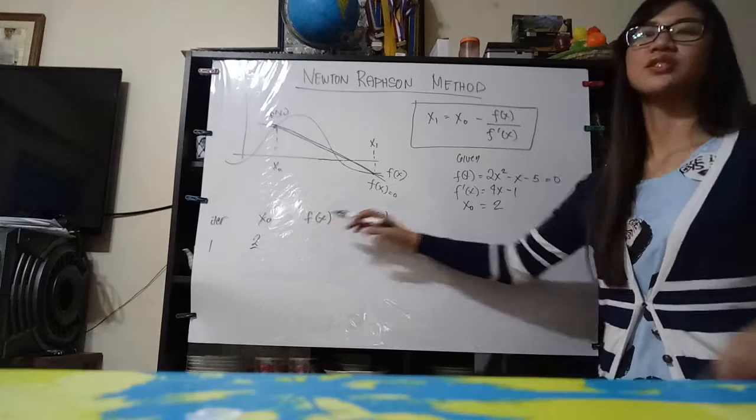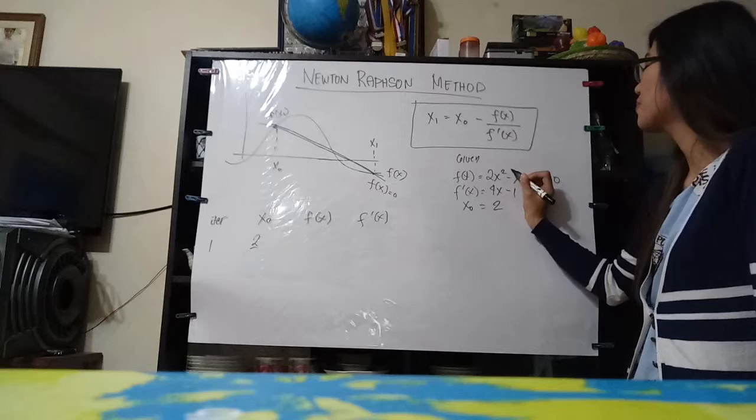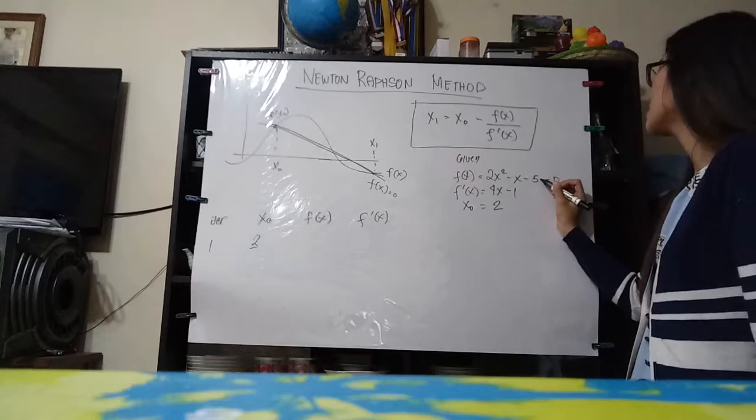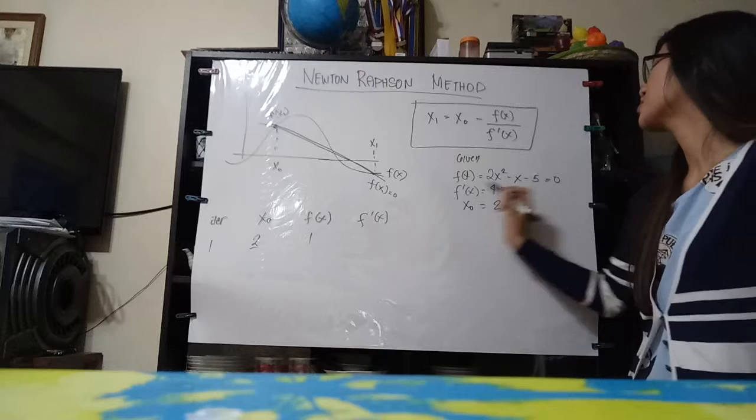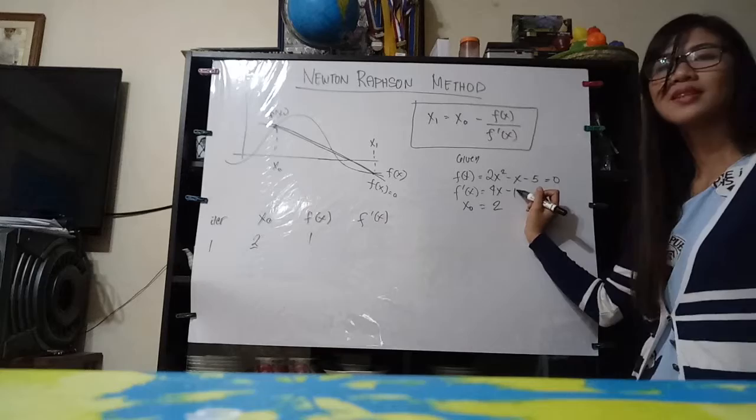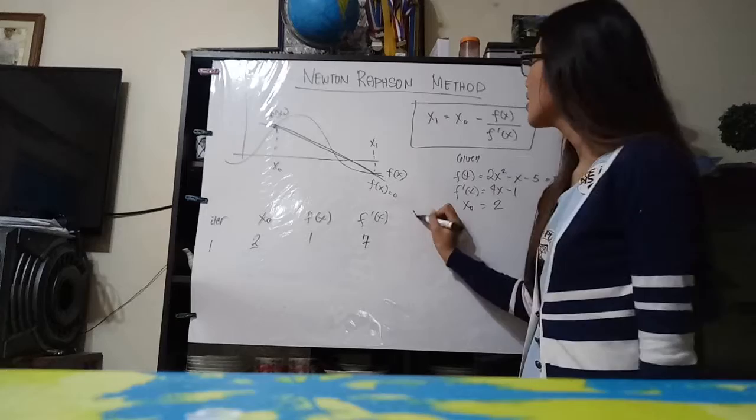We start at 2. This is our iteration 1. So basically we're just going to substitute this 2 here into our function so that we can evaluate it. So 2 times 2 squared, that would be 4 times 2, which is 8, minus 2, that would be 6, minus 5 equals 1. And for the derivative of the function, we just substitute 2 here: 4 times 2, that would be 8, minus 1, that would be 7.